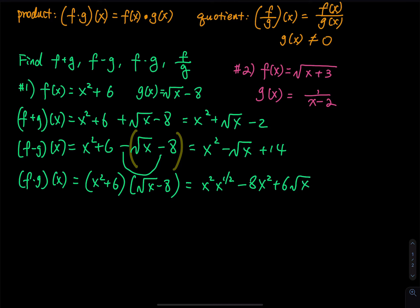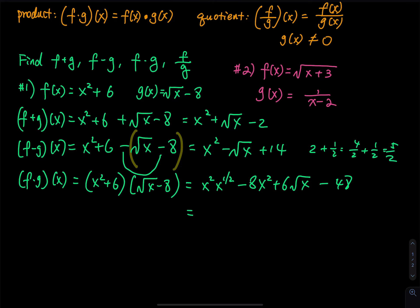How do you handle the two exponents, the two and the one half? You add them. So two plus one half is four over two plus one half, which equals five over two. So the result is x to the five over two minus 8x squared plus six x square root of x minus 48. That is the third one.